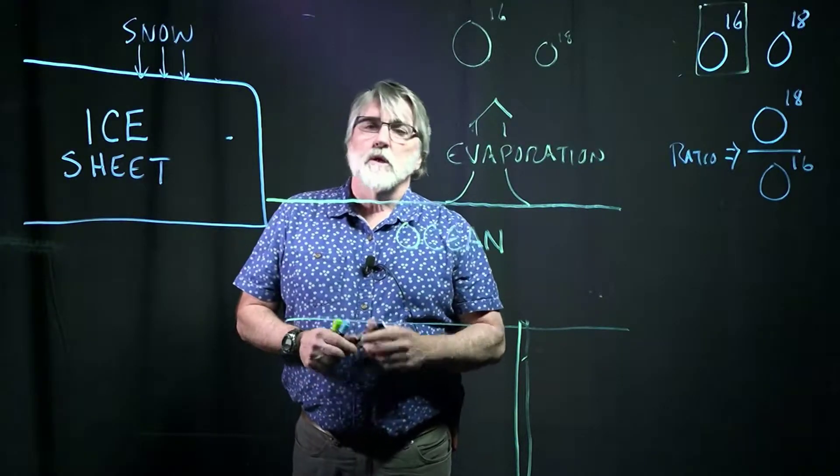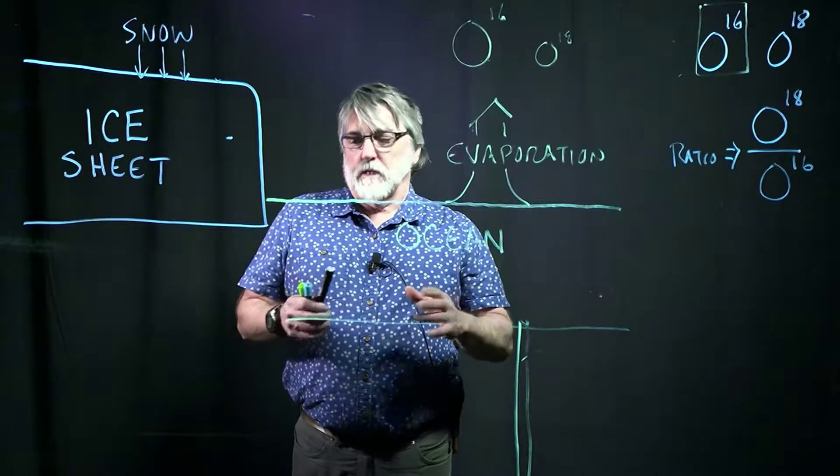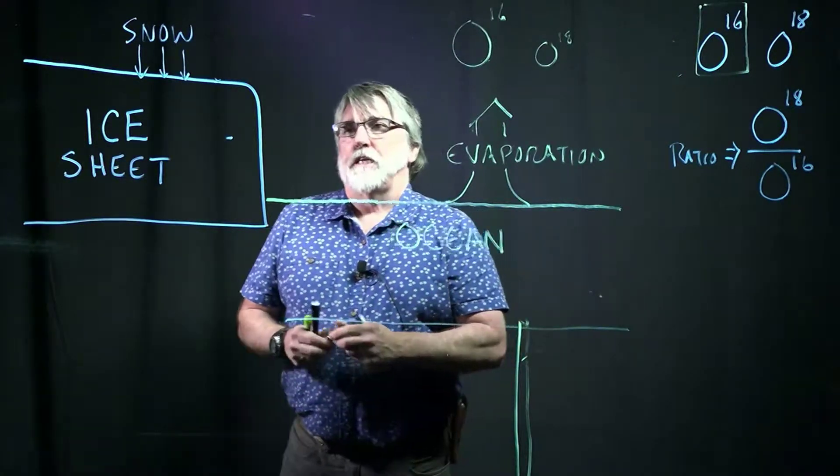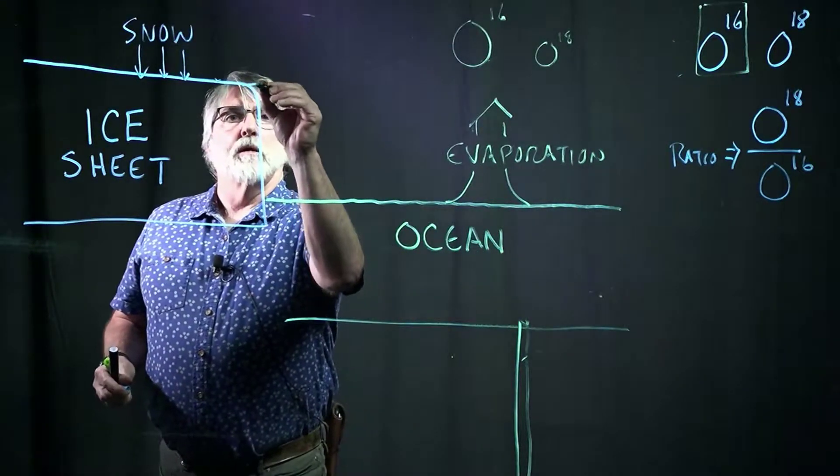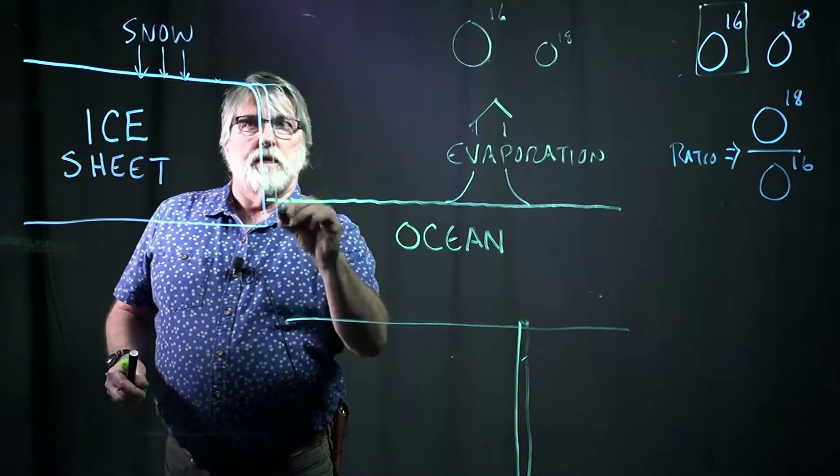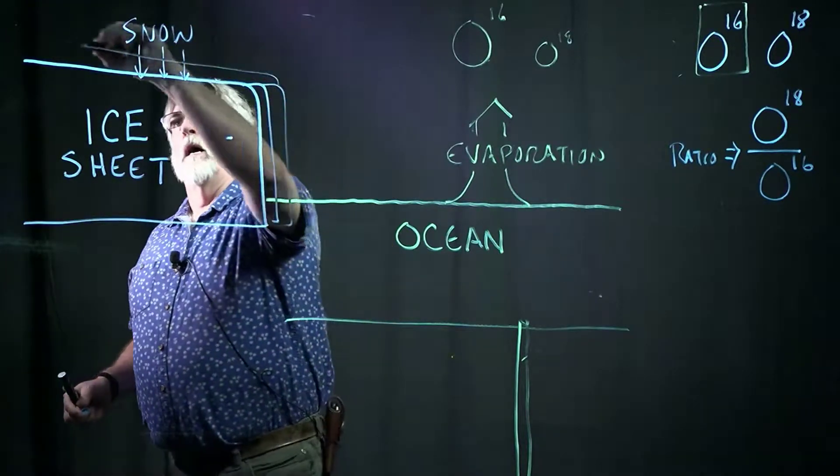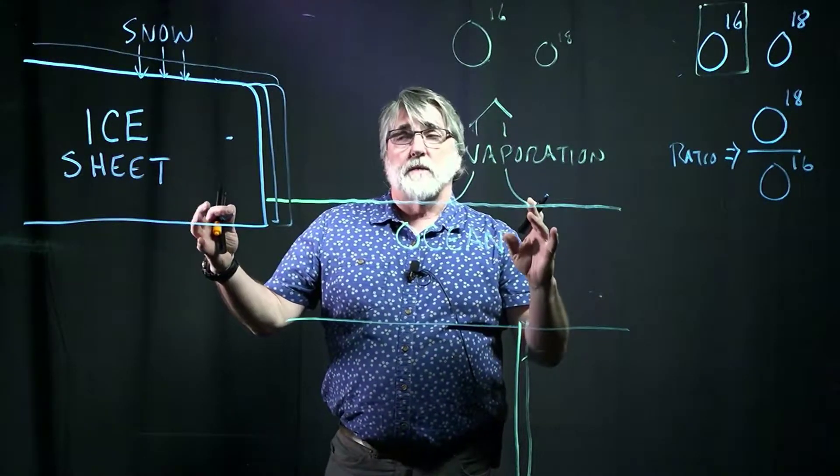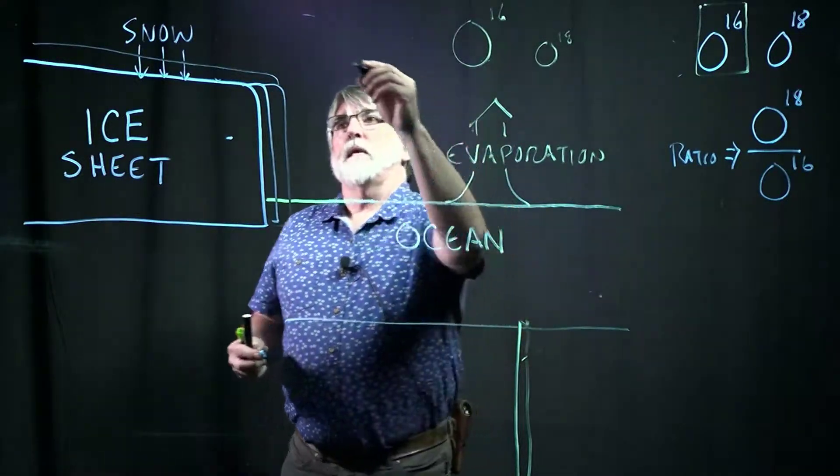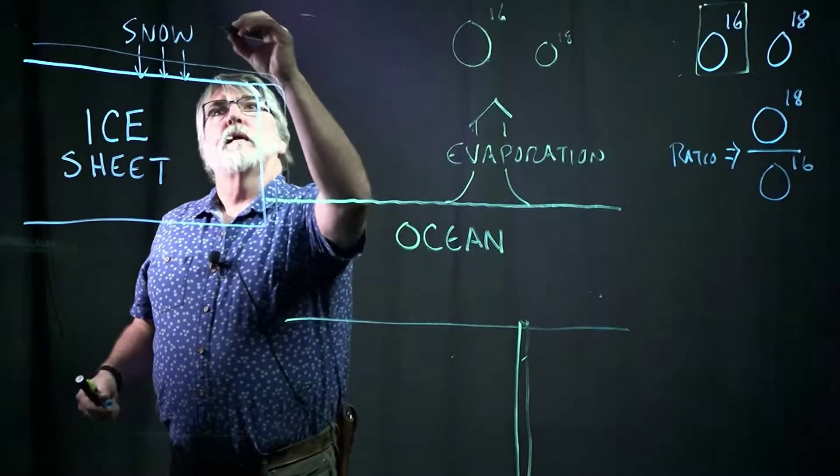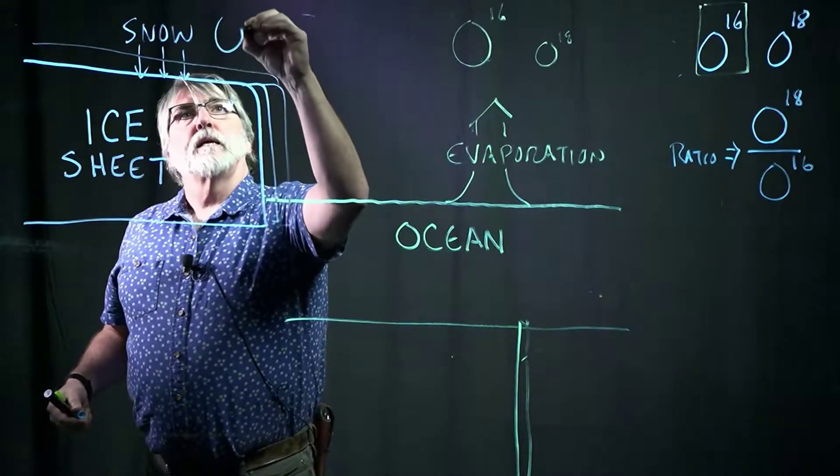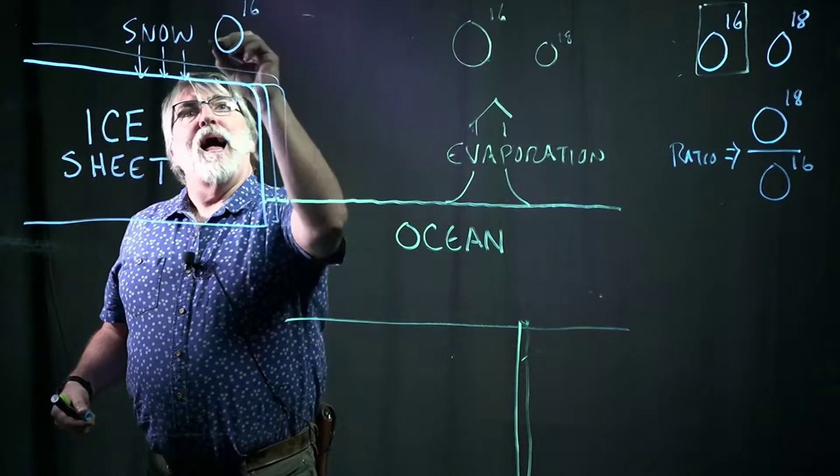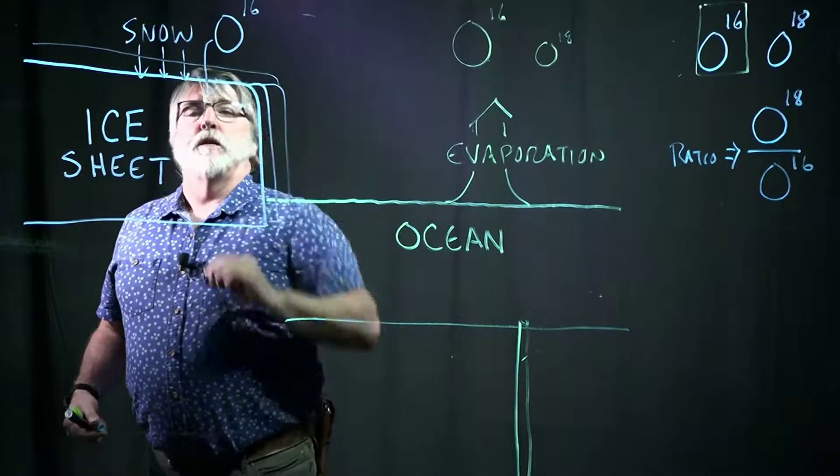Okay, so now let's think about a situation where the Earth is essentially getting colder. So what happens when the Earth gets colder? The ice sheet gets bigger. This grows, it grows out and it grows up, and there's more and more water tied up in ice. So what this means is we are taking O16 out of the system and putting it into the ice.